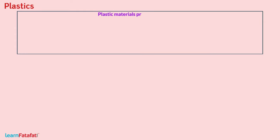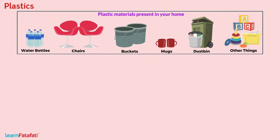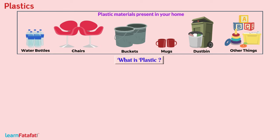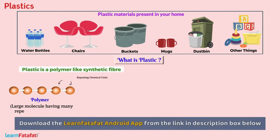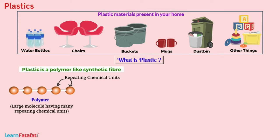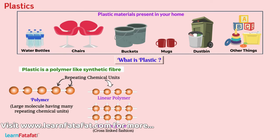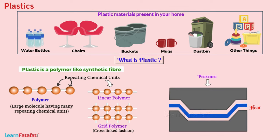Can you list the plastic materials present in your home? Water bottles, chairs, buckets, mugs, dustbins, and many others are made from plastic. Plastic is a polymer like synthetic fiber. A polymer is a large molecule having many repeating chemical units. In plastic, these units may join in a linear fashion or in a cross-link fashion. By application of heat and pressure, it is possible to form any shape from plastic, making it easily moldable.